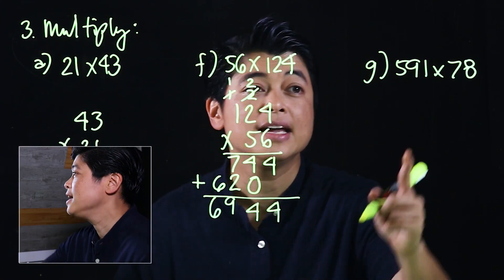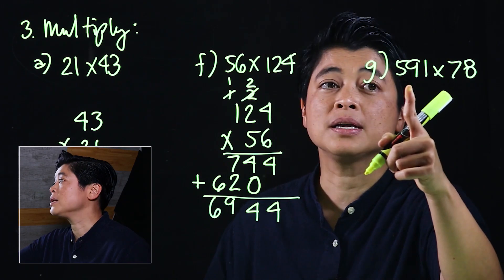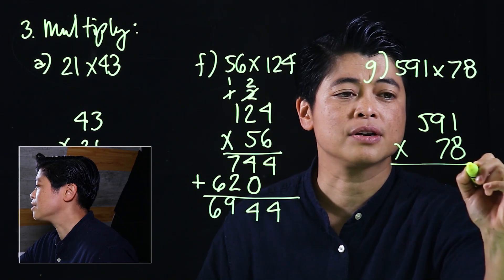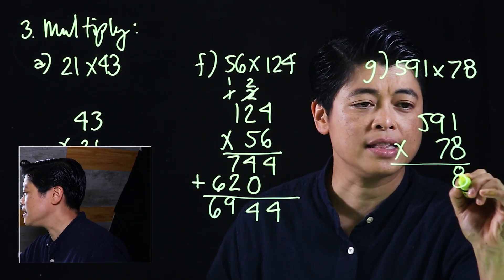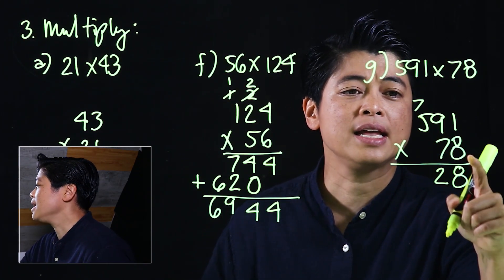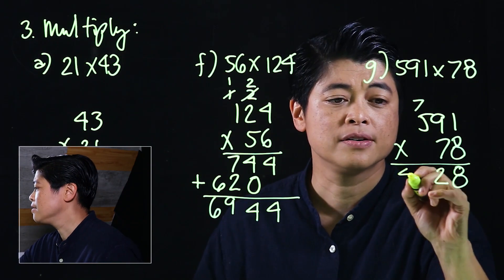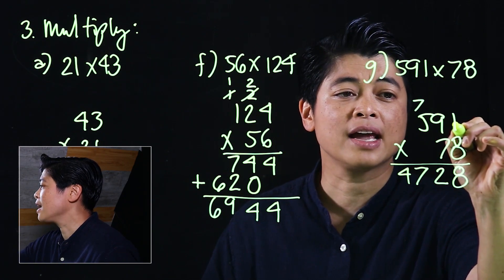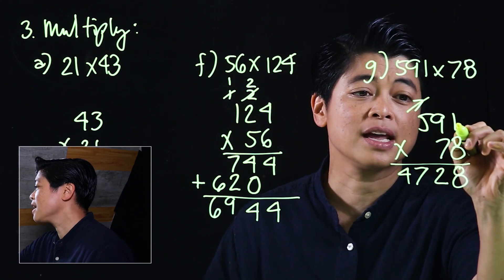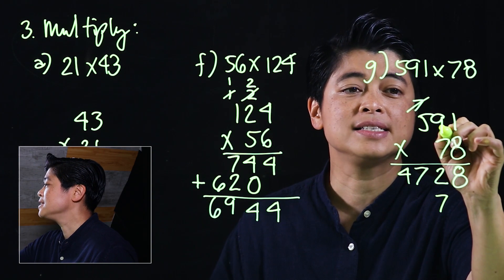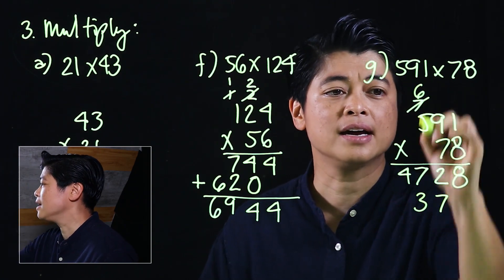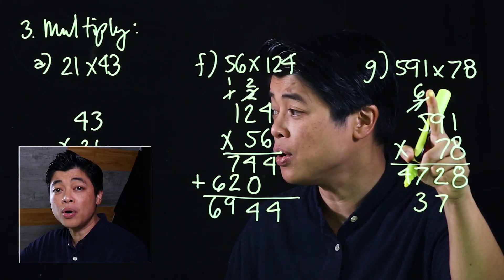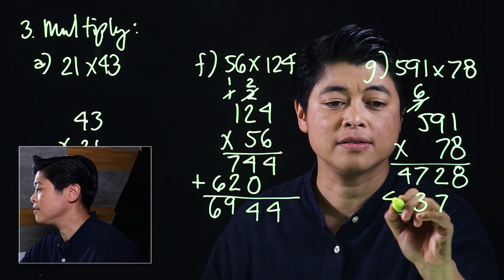Finally, letter G: multiply 591 by 78 — cannot be done mentally. Starting with the ones digit: eight times one is eight; eight times nine is 72; eight times five is 40 plus seven is 47. The second step — cross out the carried numbers first — seven times one is seven; seven times nine is 63, giving three with a carry of six; seven times five is 35 plus six.